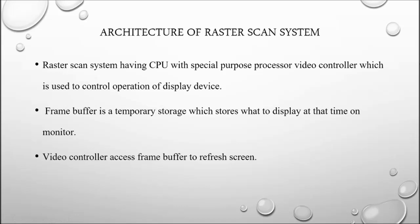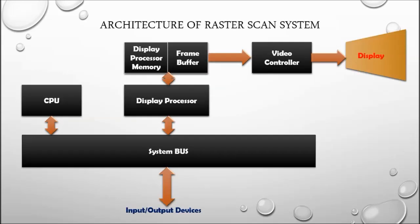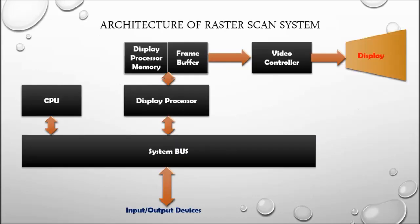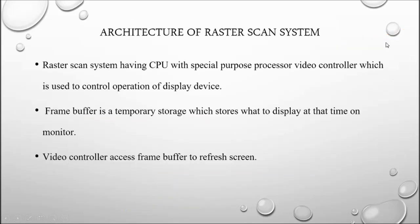In a raster scan system, we have a CPU with a special purpose processor called the video controller. The video controller is a special purpose processor used to control the operation of the display device — we use it to control the functioning of the display device.